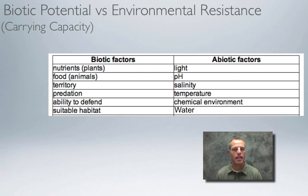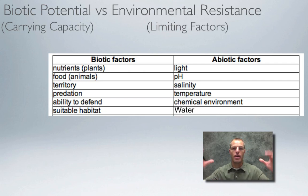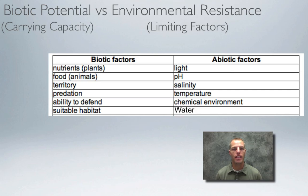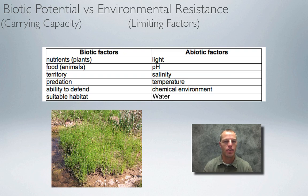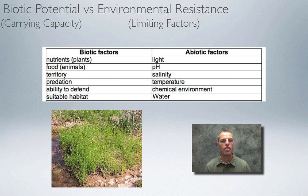Environmental resistance comes from abiotic and biotic limiting factors. For example, if a plant doesn't get enough light because big trees grow around it, that limits its ability to photosynthesize — that's a limiting factor and an abiotic environmental resistance. Looking at grasses in a wetland grassland biome, things that allow them to thrive include plenty of water, the right temperature, plenty of nutrients in the soil, and not many predators.